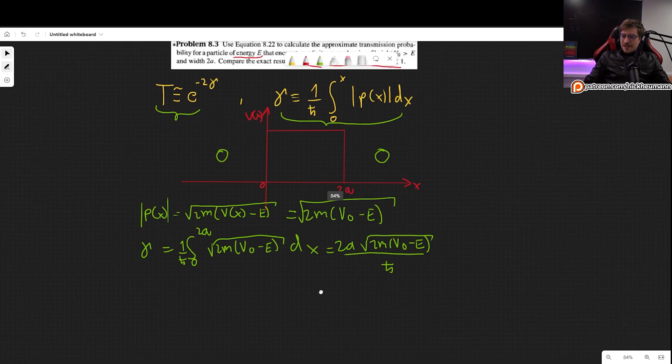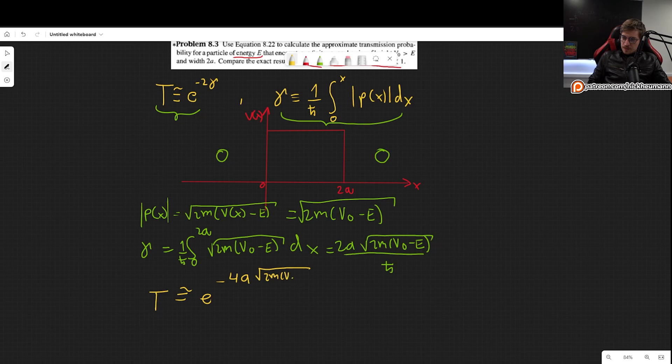However, this thing doesn't depend on x at all, so integrating this is trivial. It's simply 2a times that. So we get γ = 2a√(2m(V0 - E)) divided by ℏ. So this is our gamma. Now this is what we now plug into T.